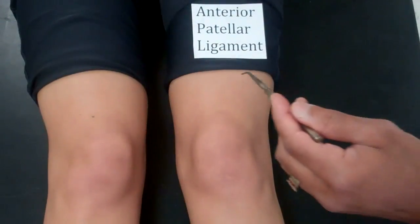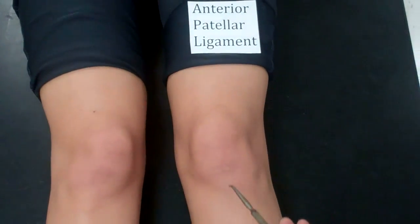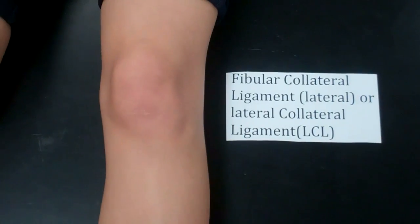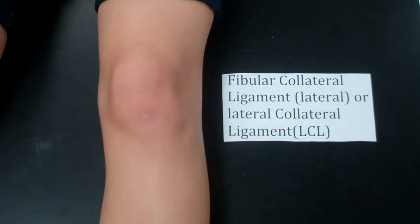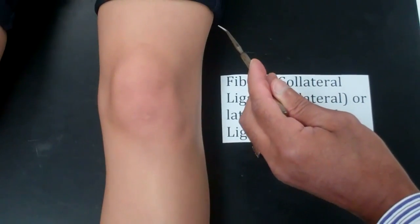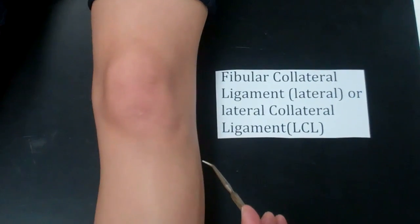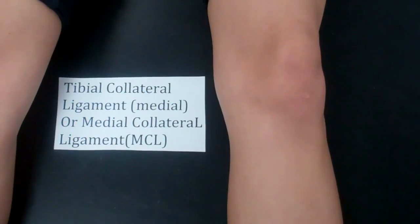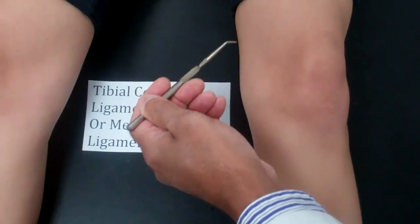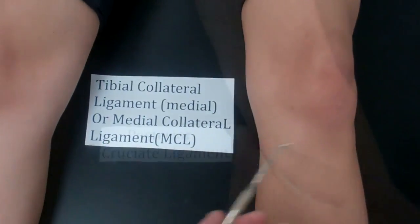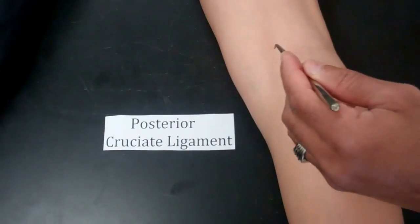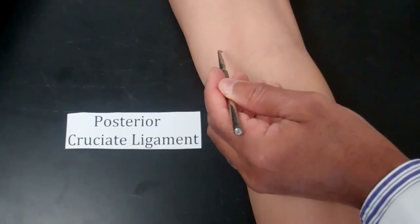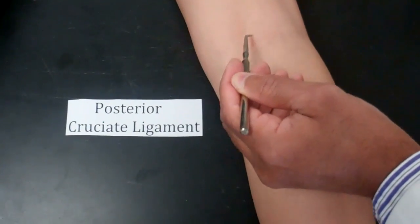The anterior patellar ligament is this ligament along here that encloses the patella. The fibular collateral ligament or LCL will be this ligament along here. The medial collateral ligament or MCL is this ligament along here. The posterior cruciate ligament — looking at the posterior aspect of the knee — will be this ligament along here.